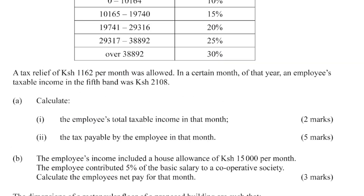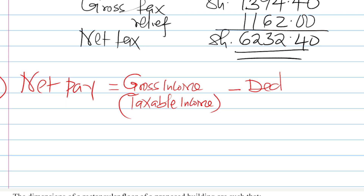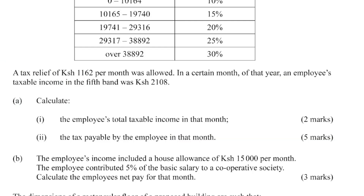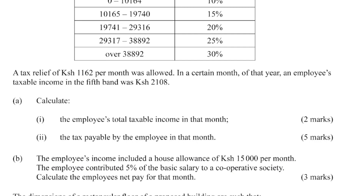Now we go to part B. The employee's income included a house allowance of 15,000 per month. The employee contributed 5% of the basic salary to a cooperative society. Calculate the employee's net pay. Net pay is given by taking the gross or taxable income, then subtracting all deductions. In this question, there are only two deductions: the net tax and 5% of the basic salary.